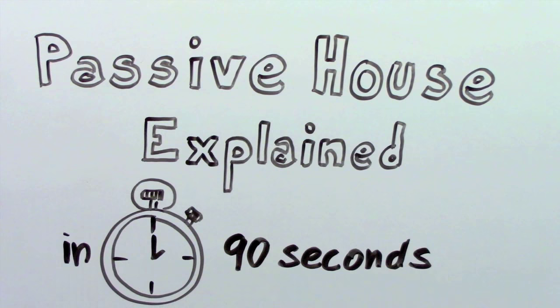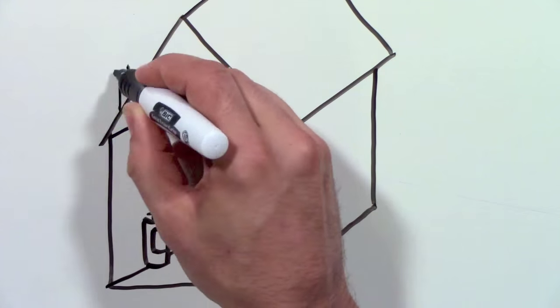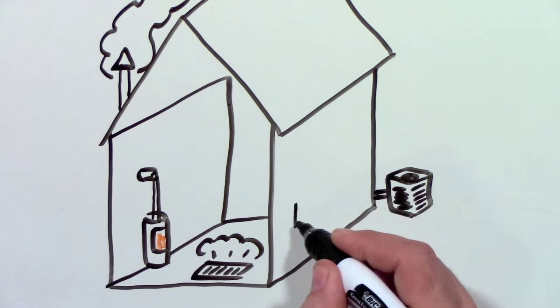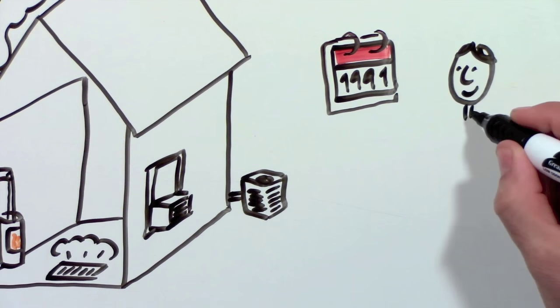Passive house explained in 90 seconds. Does your house have a heater in the basement or maybe a fireplace? Probably also a central air conditioner or maybe a window unit. Did you ever wonder if it was necessary?